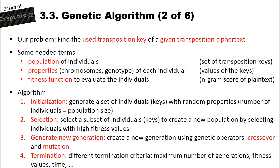First, we need some terms with respect to the genetic algorithm. We have a population of individuals — in our case, a set of transposition keys. These have properties called chromosomes or genotype of each individual, which in our case are the values of the transposition keys. Then we have the fitness function to evaluate the individuals — in our case, this is the n-gram score of the decrypted plaintexts when we use our keys to decrypt the ciphertext.